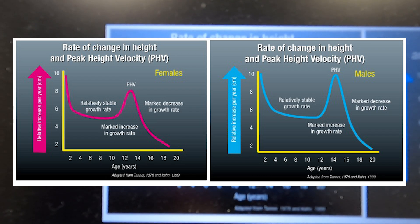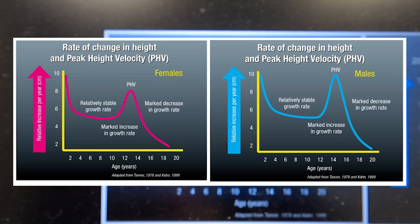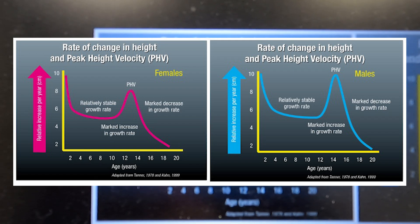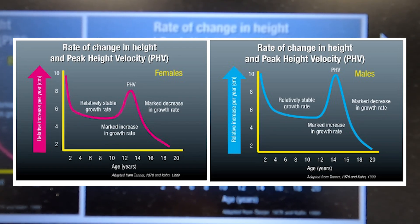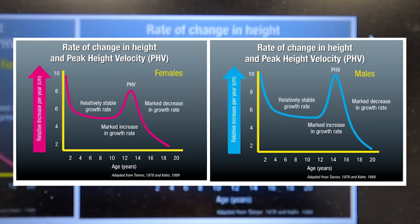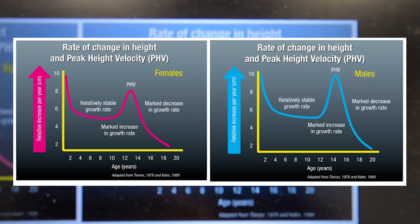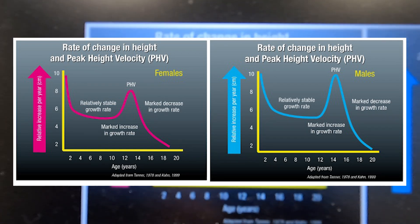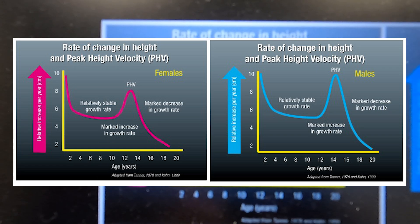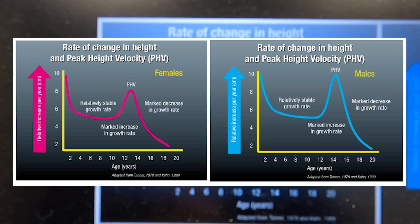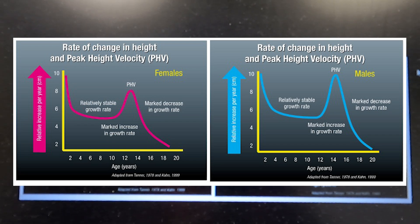That peak is usually when scoliosis is progressing at its quickest. For boys it's the same thing but a little bit later — we know that boys tend to grow a little bit later on the timeline, so their peak velocity is 14 to 15, starting to drop off at 16. These are averages; it could very well be that a girl's growth is earlier or a little later, but these are useful guides for directing how we should approach treatment.